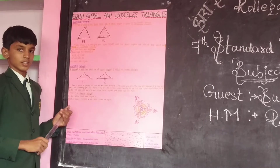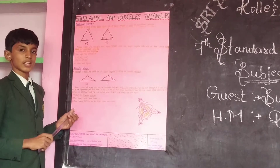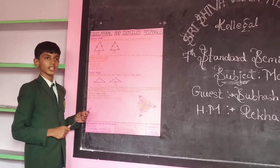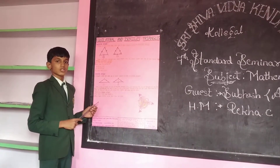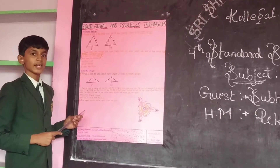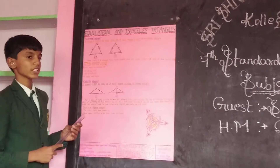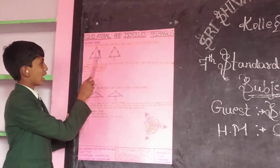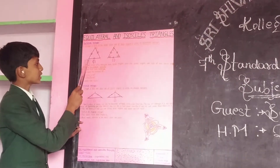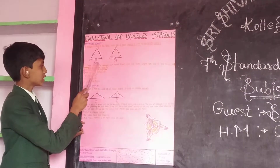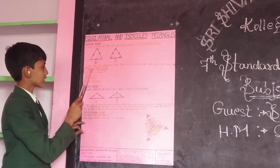Since all sides are equal, all angles are also equal. Angle A equals angle B equals angle C.